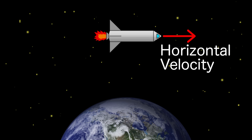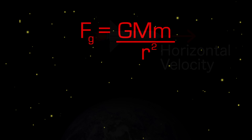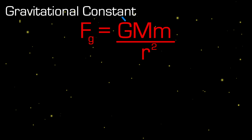We want to know the ideal horizontal velocity for the altitude we reach, so we need an equation for this. If you went to high school, or maybe are just fluent in Google, you have probably heard Newton's equation for the force of gravity. G is the gravitational constant, big M is the mass of the Earth.